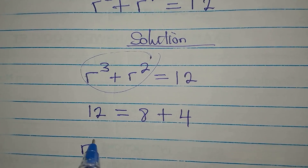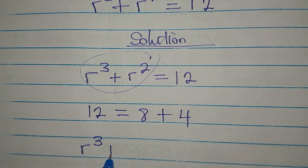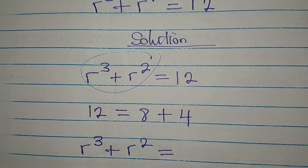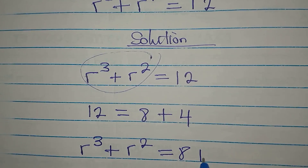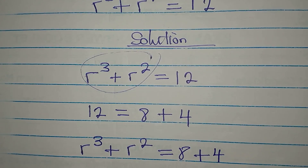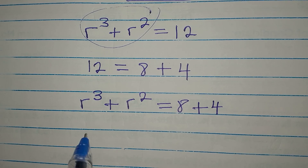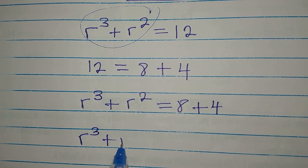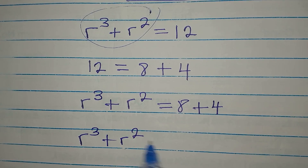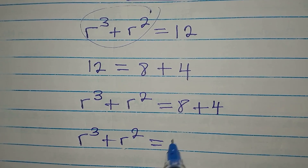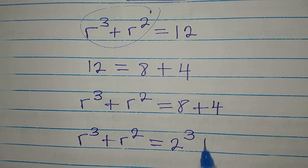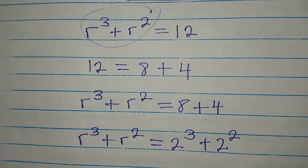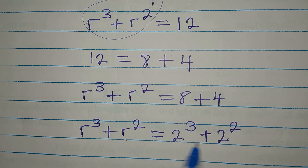So we have r to the power of 3 plus r to the power of 2 being equal to 8 plus 4. If you go ahead, r to the power of 3 plus r to the power of 2 shall be 2 to the power of 3 plus 2 to the power of 2 on the other side. Now we can compare both sides.